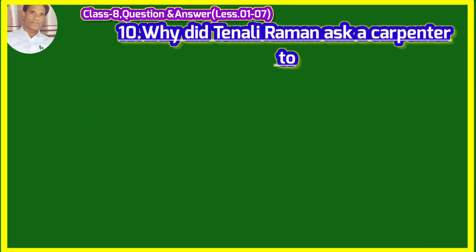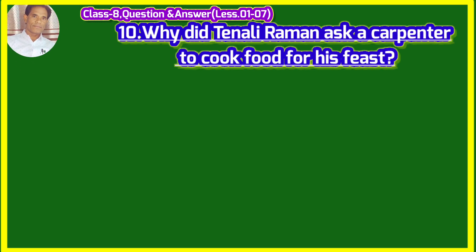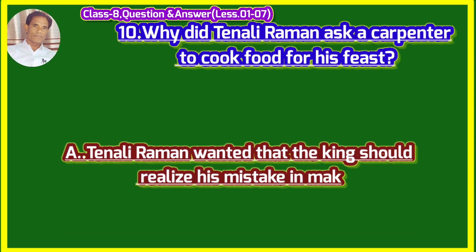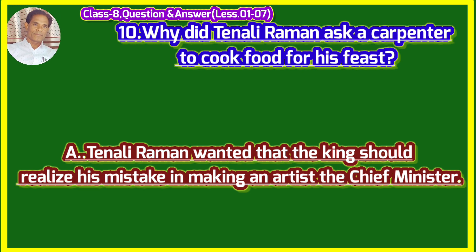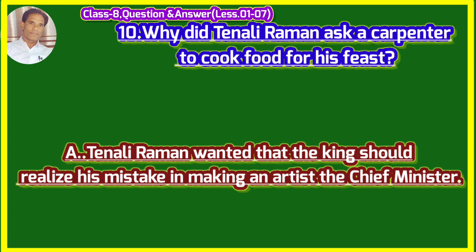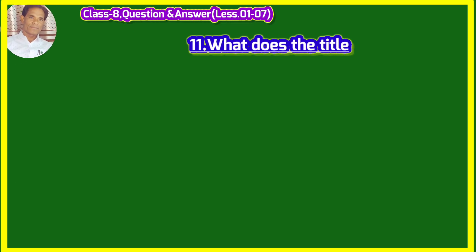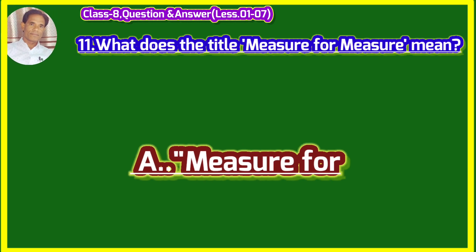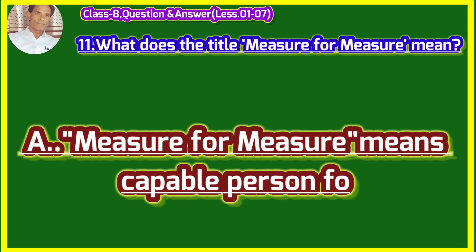Why did Tenali Raman ask a carpenter to cook food for his feast? (Tenali Raman ne apne yahaan dawat ke liye badhai ko bhojan pakane kyon kaha?) Tenali Raman wanted that the king should realize his mistake in making an artist the chief minister. Tenali Raman chahata tha ki raja ichitrakar ko mukhya mantri banane ki galti ko mahsus kare. What does the title 'Measure for Measure' mean? (Sirshak maabdhand ka paimana ka kya arth hai?) Measure for Measure means capable person for valuable post.